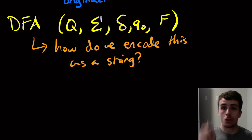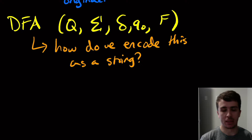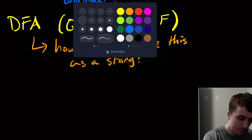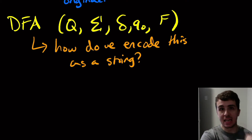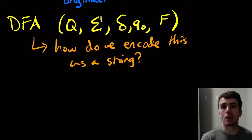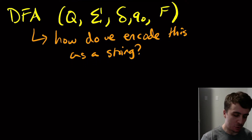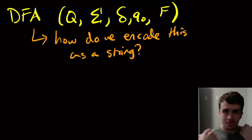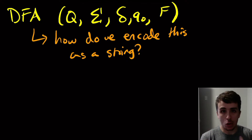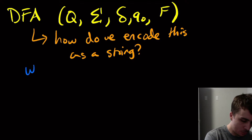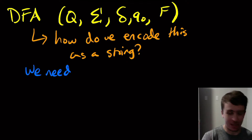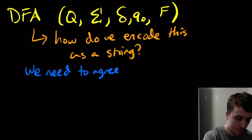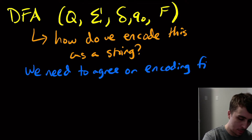It turns out there isn't one specific way of doing things — there are in fact infinitely many different ways of doing this. What we want is to agree on what the encoding is in advance. Once we agree on it, then it's okay; you can do anything that you want. If you agree on the encoding process and what the string actually looks like, then it doesn't matter what encoding you pick as long as we agree on it. We — meaning all of us who are talking about this — need to agree on the encoding first, but any encoding is okay.